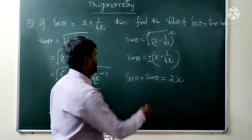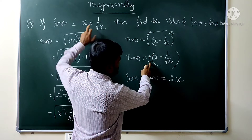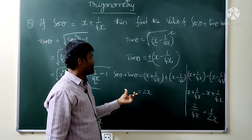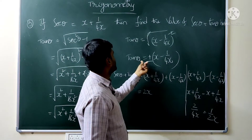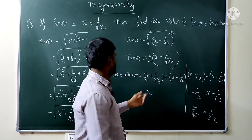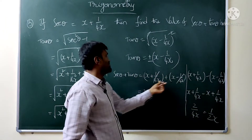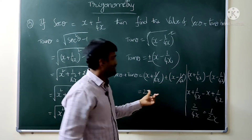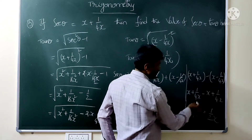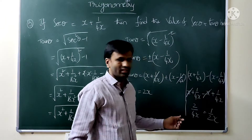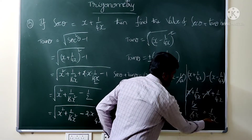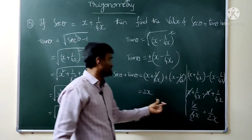We write plus or minus because we get both plus and minus values. For the plus case: 1/4x and minus 1/4x cancel, giving 2x. For the minus case: x and minus x cancel, and 1/4x plus 1/4x gives 2/4x = 1/2x. So the answer is 2x or 1/2x — there is a chance for both answers.